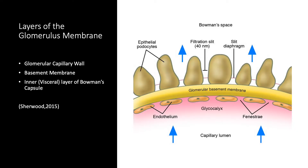The glomerulus is a loop of capillaries twisted into a ball shape surrounded by Bowman's capsule. It is found within the nephrons of the kidneys that filter a portion of water and solutes from the circulating blood. The blood enters the glomerulus through the afferent arterioles and exits through the efferent arterioles. There are three layers that make up the glomerulus membrane, through which fluid must pass before entering Bowman's capsule.